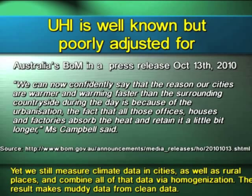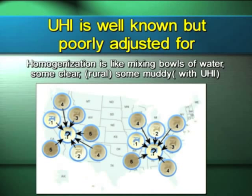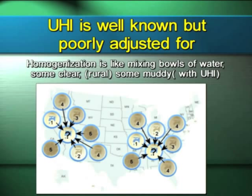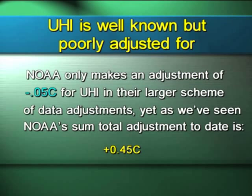In Australia, the Bureau of Meteorology has found that UHI is an issue, as published on October 13th, 2010. UHI and homogenization is kind of like mixing bowls of muddy water. If you have a number of different bowls of water — one clean, representing a pure temperature signal, and one dirty muddy water representing a muddy signal from a city that's been UHI-affected or siting-affected — when homogenization is done, all the data from different sites is mixed together to create a new value, like what we saw at Lampasas. So it's like mixing muddy water together. Is that representative of what the climate is? I don't think it is.